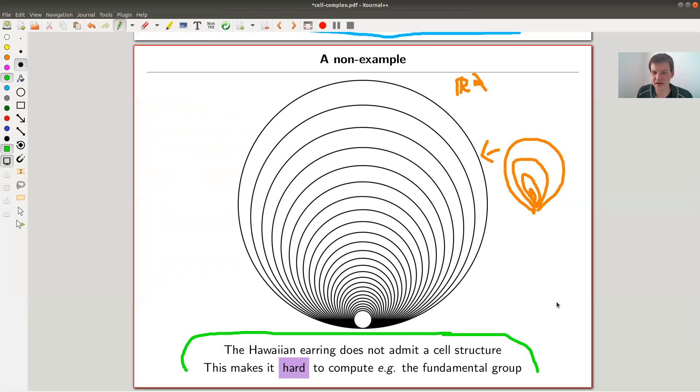Actually, you can show that this space doesn't admit a cell structure. Most of the things you like to compute are a bit crazy. I was shocked when I learned about the fundamental group of this example. It looks pretty easy. It seems to be not very complicated. But this point at the bottom is really ill behaved.